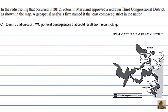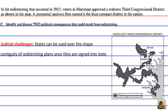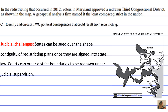A political consequence resulting from redistricting is judicial challenges. States can be sued over the shape and contiguity of redistricting plans once they are signed into state law. Courts can order that district boundaries be redrawn under judicial supervision.